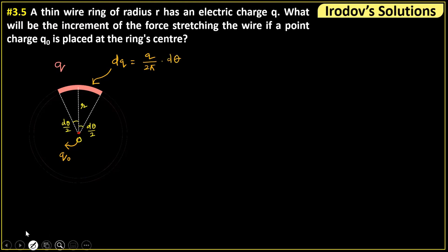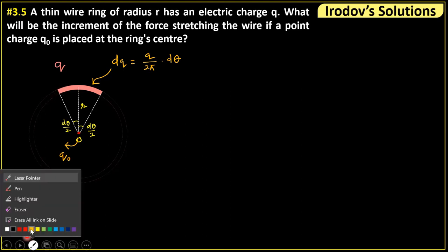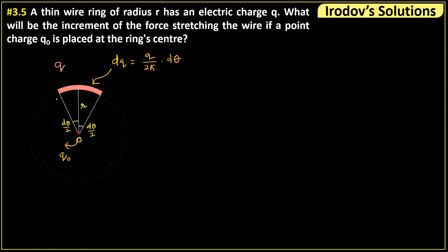By symmetry, the tension at all sections should be the same. If I consider this section, the two sides of the system pull each other with some tension, and we need to find the increment of that tension. The increment is coming because of this extra charge q₀. The tension is along the length and it is a pull — let this increment of tension be δt, acting on both sides.